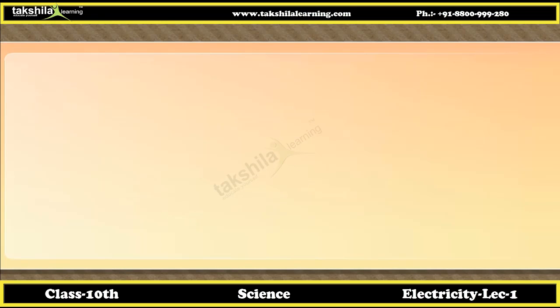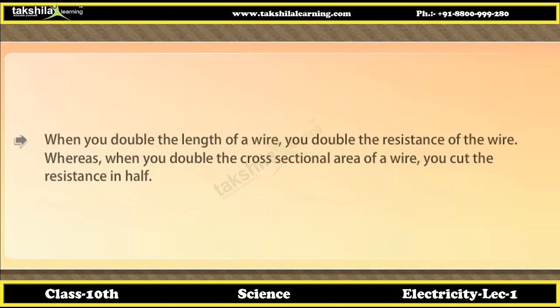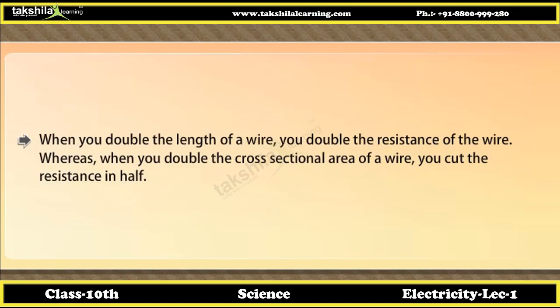Did you know? When you double the length of a wire, you double its resistance. Whereas when you double the cross-sectional area of a wire, you cut the resistance in half.